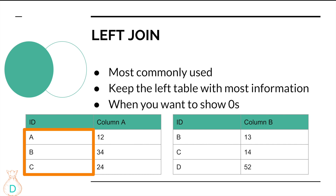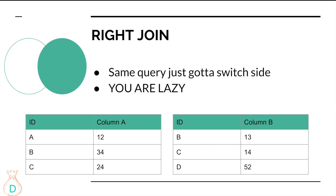Another use case for left join is showing customers who did not make any purchase. You put your customer table as the leftmost table and left join with your sales data. If a customer didn't make any purchase or generate any revenue, you will show zeros for those customers.